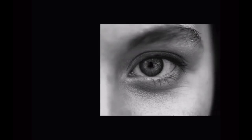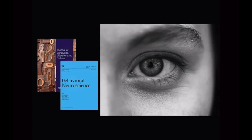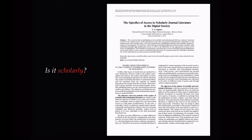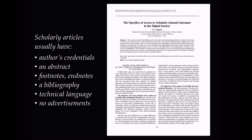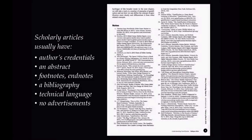Is it scholarly? Scholarly articles are typically associated with scholarly journals like the Journal of Language, Literature and Culture or Behavioral Neuroscience. Authors' credentials — typically their title and university — are often provided. Scholarly articles usually have an abstract, a brief capture of what to expect in the article, and will almost always contain footnotes or endnotes and offer a bibliography of works referenced.